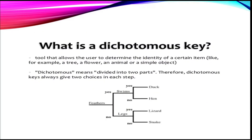It may be in the shape of a tool that allows users to identify a certain item — like a tree, a flower, an animal, or even a simple object. The word 'dichotomous' means divided into two parts. Therefore, the dichotomous key gives two choices at each step.